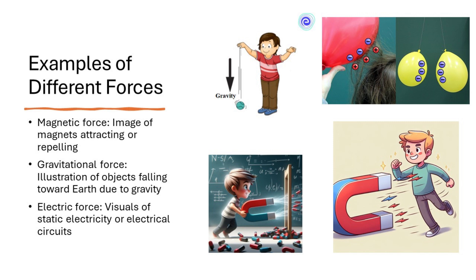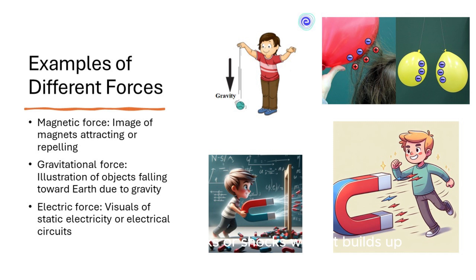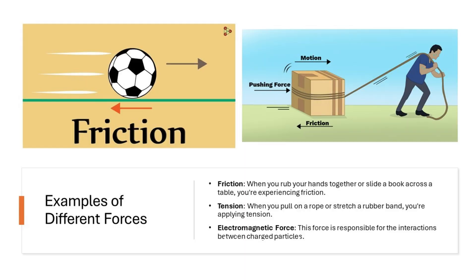Magnetic force: magnets can pull certain objects towards them or push them away, depending on their poles. Gravitational force: gravity is what keeps us on the ground and makes objects fall towards the earth when dropped. Electric force: electricity powers our devices and can create sparks or shocks when it builds up. Friction: the difference in how easy it is to walk on a slippery floor versus a rough carpet is because of friction — it's a stickiness between two surfaces rubbing together, helping you stop when riding a bike.